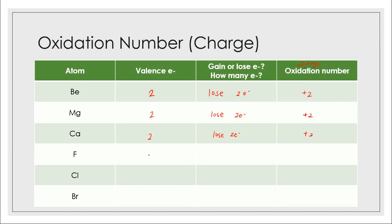What about fluorine? Fluorine has seven valence electrons because it is in group 17. Will it gain or lose electrons? Fluorine is a non-metal, and non-metals tend to gain electrons. It already has seven, so it wants one more to reach eight. The oxidation number is minus one — minus because it's gaining an electron. Chlorine also has seven valence electrons, so it gains one for an oxidation number of minus one. Bromine is the same: seven valence electrons, gains one electron, oxidation number of minus one.